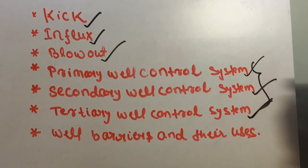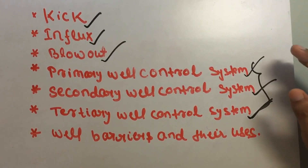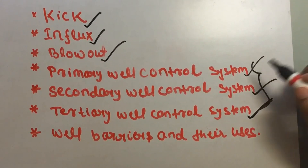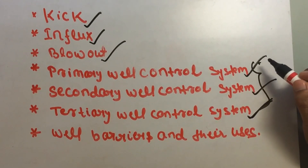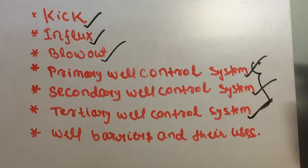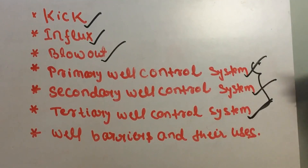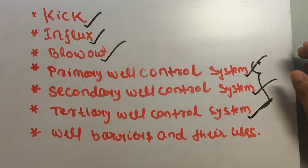Well barriers come in two types: primary well barrier and secondary well barrier. The primary well barrier is the hydrostatic mode — the primary well control system such as the mud system. When we use BOPs and IBOPs and similar equipment, those are known as the secondary well barrier.